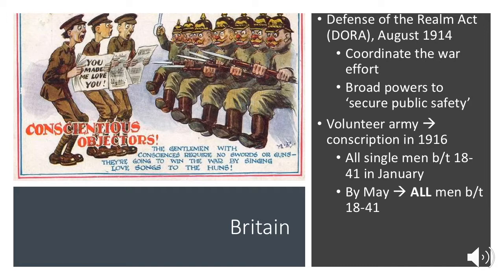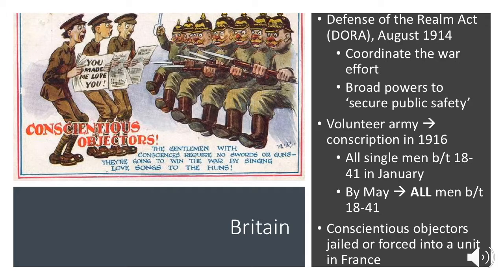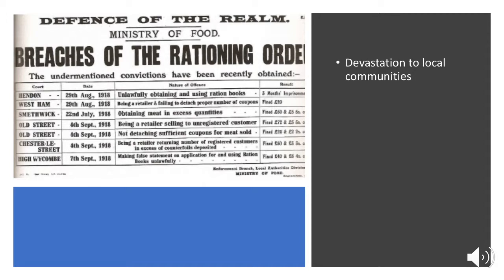By May, they changed it to all men. If you were married or the oldest son, it didn't matter. By age 41, it was likely you had a family, and the potential impact after the war was significant. Conscientious objectors — those who refused to go to war based on their conscience or religion — were jailed or forced to join military units. Some people, to avoid this, joined non-fighting aspects of the military.